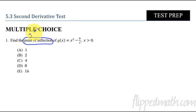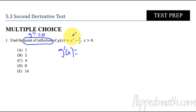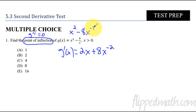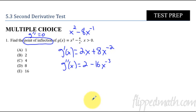A point of inflection is going to happen when the second derivative changes signs — typically that's when it equals zero, but really I'm looking for when the second derivative changes signs. Now I know what to do with this problem. I find the first derivative first, so let's rewrite this: x squared minus 8x to the negative one. The derivative is 2x plus 8x to the negative two.